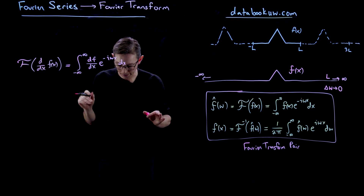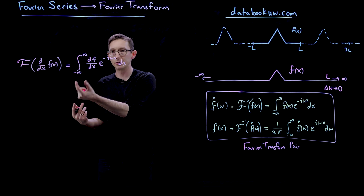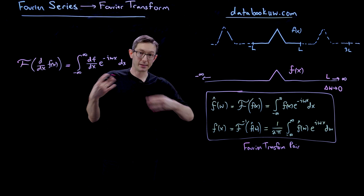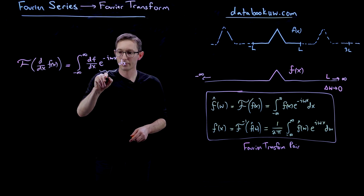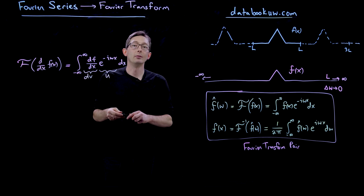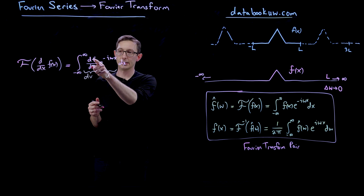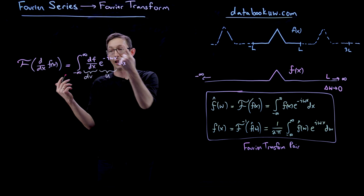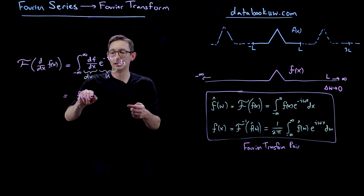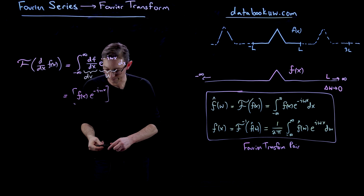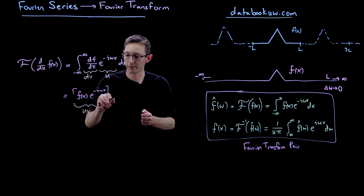Now we're going to integrate this by parts. Remember the integral of u dv equals u v minus the integral of v du — that's integration by parts. Here we're going to let e to the minus i omega x be u, and d f dx dx be the dv. When we integrate by parts we get u v. Since dv is d f dx, v is just f. So that equals f of x times e to the minus i omega x, evaluated at the bounds of integration from minus infinity to infinity.